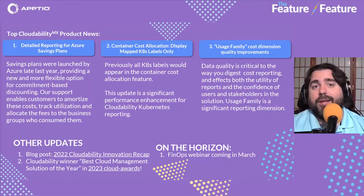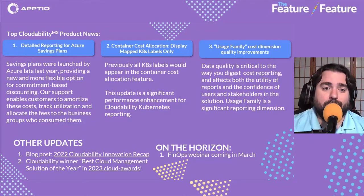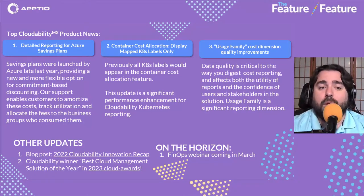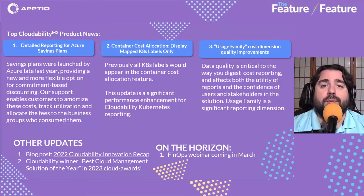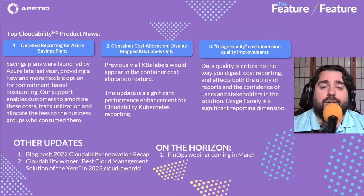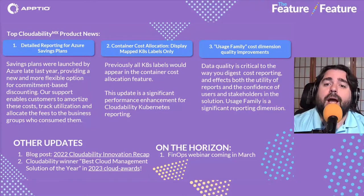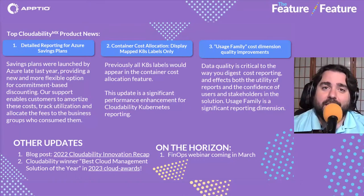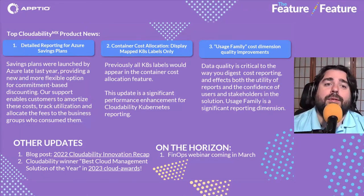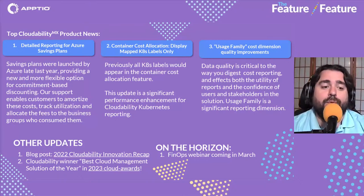We've enhanced the container cost allocation capability so you can display and map Kubernetes labels only. This is a significant performance enhancement for Cloudability — it reduces results for broader reports and makes it faster for users to see the data they need. That report generates much faster with that filter. For usage family cost dimensions, there were quality improvements focused on improving data quality and digestibility, delivering faster time to value when generating and finding those reports.